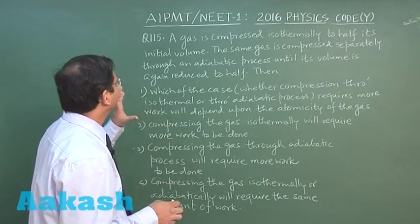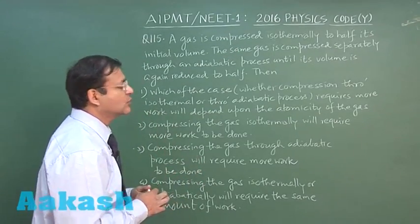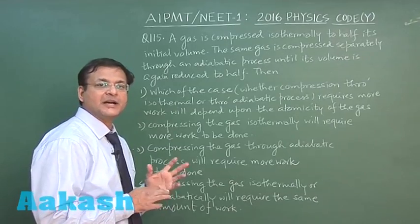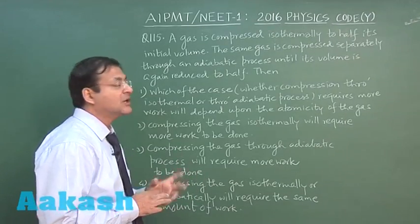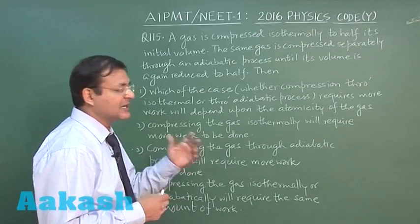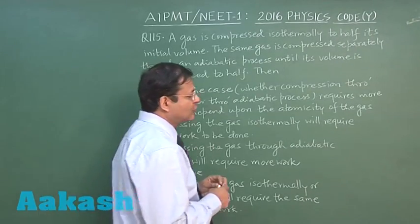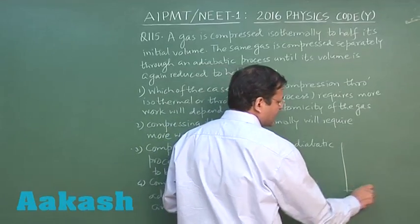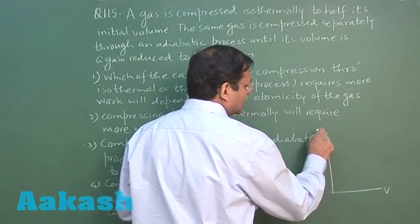Now let us look at next question, that is question 115. This is the question 115 which is making you compare the work done in isothermal and adiabatic compression. This particular question can be solved easily if you take help of PV diagram. If you look at PV diagram for compression.